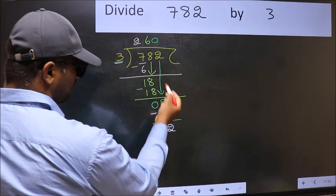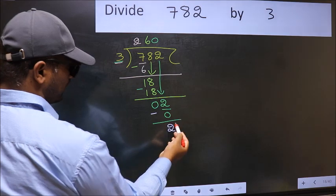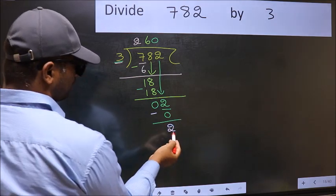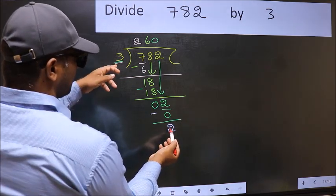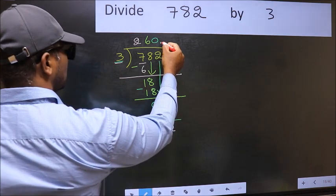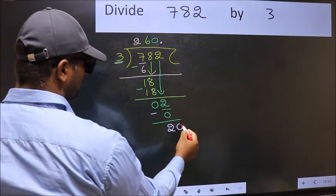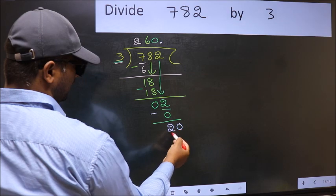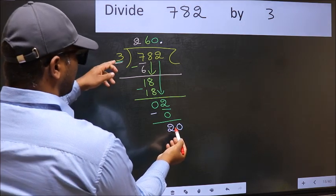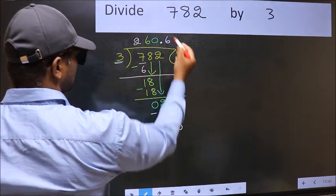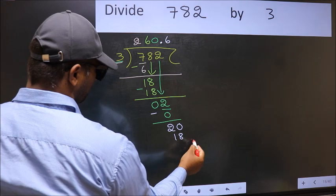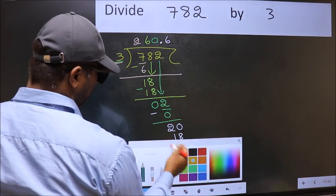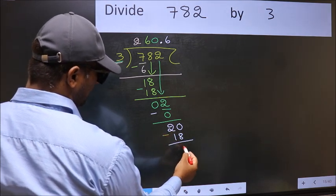Over here, we did not bring any number down, and 2 is smaller than 3. So now you can put a dot and take 0. So, 20. A number close to 20 in 3 table is 3 times 6, which is 18. Now you should subtract. 20 minus 18 is 2.